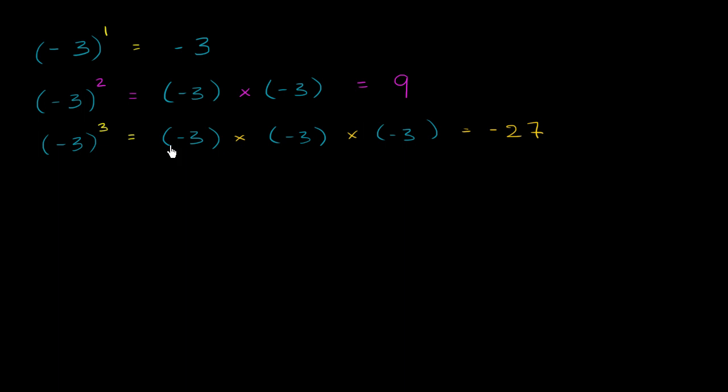And so you might notice a pattern here. Whenever we raise a negative base to an exponent, if we raise it to an odd exponent, we are going to get a negative value. And that's because when you multiply it an even number of times, the negatives cancel to positive. And then you have one more negative to multiply it by, which makes it negative.